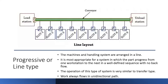The first layout is the progressive or line type, where the machines and handling system are arranged in a line. It is most appropriate for a system in which the part progresses from one workstation to the next in a well-defined sequence with no backflow. The operation of this system is very similar to a transfer line, and work always flows in a unidirectional path.